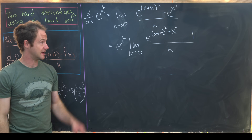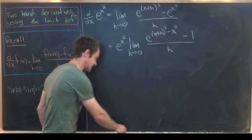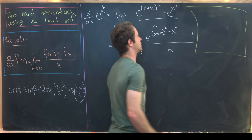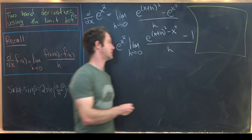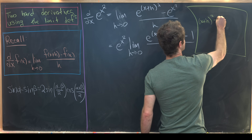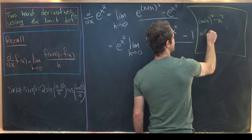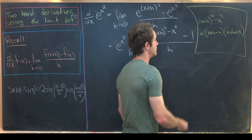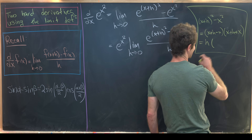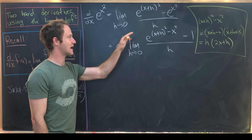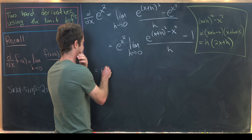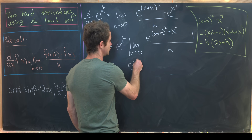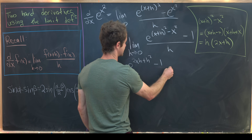The exponent (x+h)² - x² is a difference of squares: (x+h-x)(x+h+x) = h(2x+h). So the limit becomes e^(x²) times the limit as h goes to zero of [e^(2xh + h²) - 1] / h. This is motivated by the fact that the chain rule tells us the answer should be 2x·e^(x²).